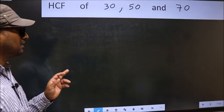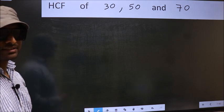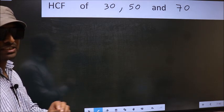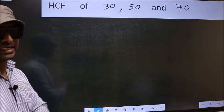HCF of 30, 50 and 70. To find the HCF, we should do the prime factorization of each number separately.